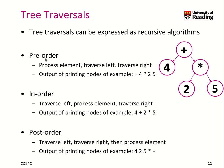Let's get started with pre-order. At a given node, you first process the element, then you traverse left, and then you traverse right. Every time you visit a node, you repeat this algorithm, because it's a recursive algorithm. So when we go from here to the left node, we repeat the algorithm: we process the element, then we attempt to traverse left — but there is nothing to traverse — then we attempt to traverse right — again nothing — and then we go back.